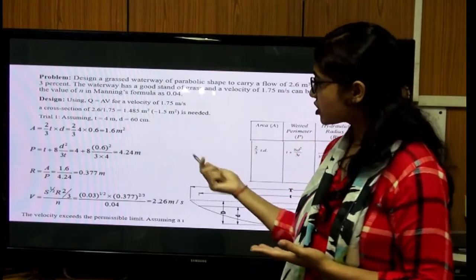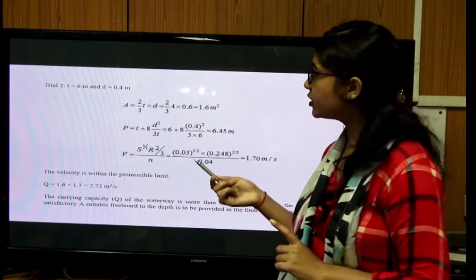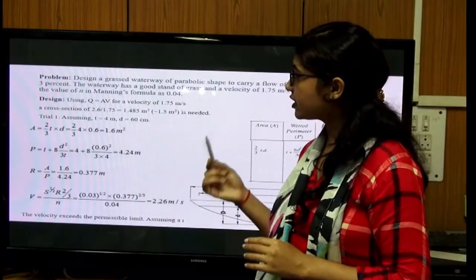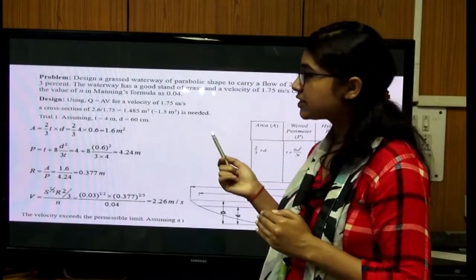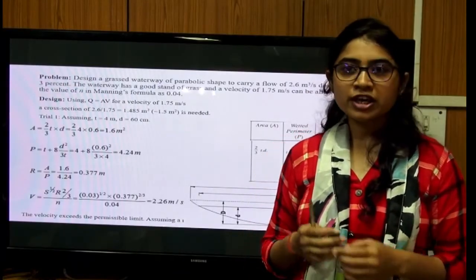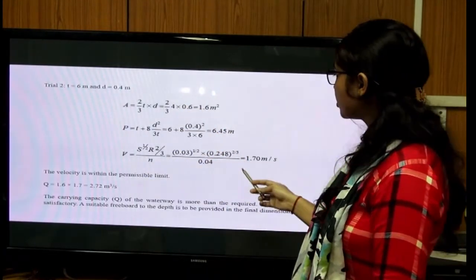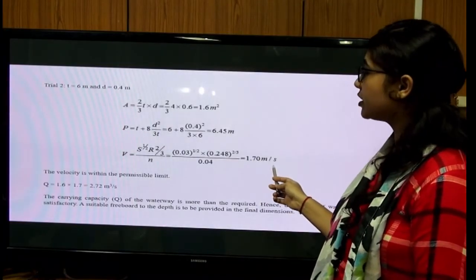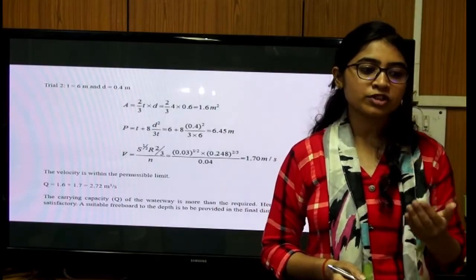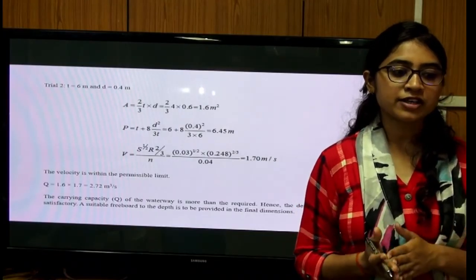In the second trial, assuming t = 6 m and d = 0.4 m, after calculating all parameters the computed velocity is 1.7 m/s, which is within the permissible limit. The carrying capacity of the waterway is more than required. Hence the design is satisfactory. A suitable freeboard is to be added to the depth in the final dimensions.